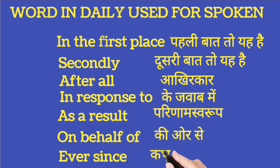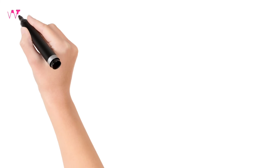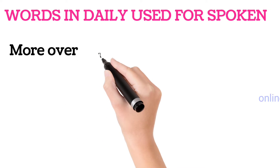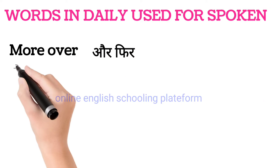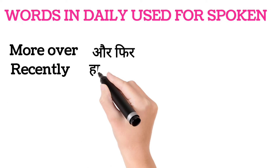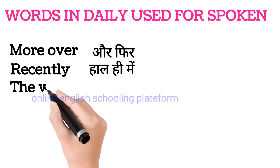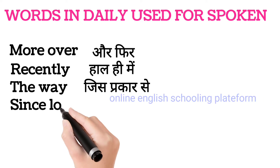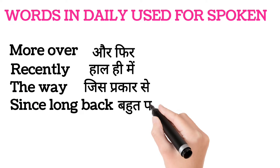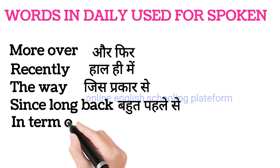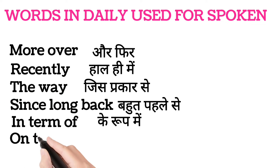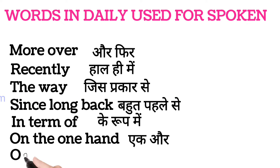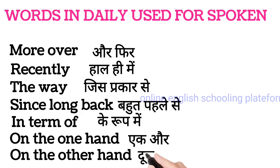Next, 'every since' — ka bhi pahli. 'Moreover' — aur phir. 'Recently' — haal hi mein. 'The way' — jis prakar. 'Since long back' — bahut pahle se. 'In terms of' — ke roop mein. 'On the one hand' — ek or. 'On the other hand' — dusri or.